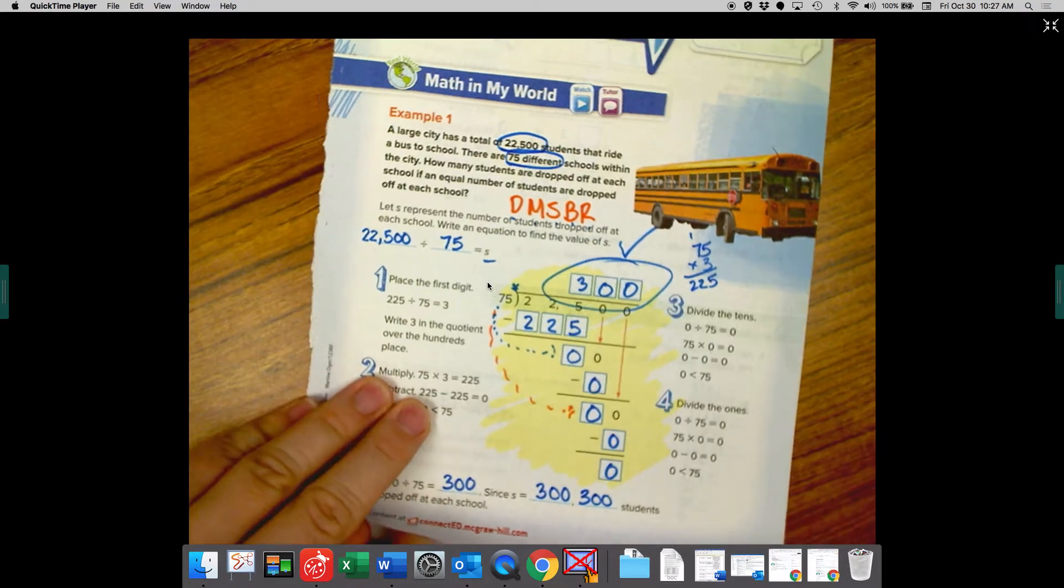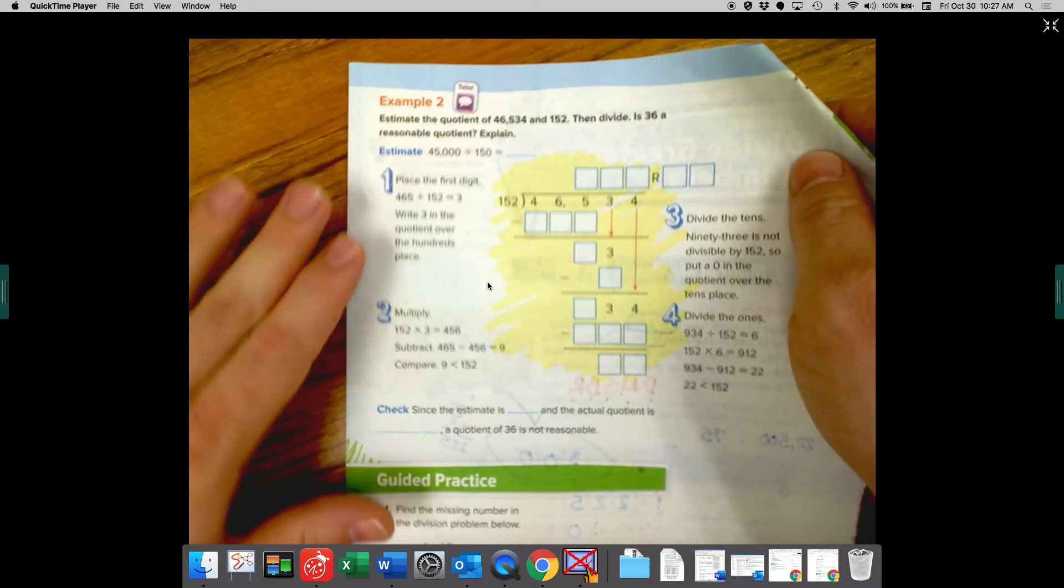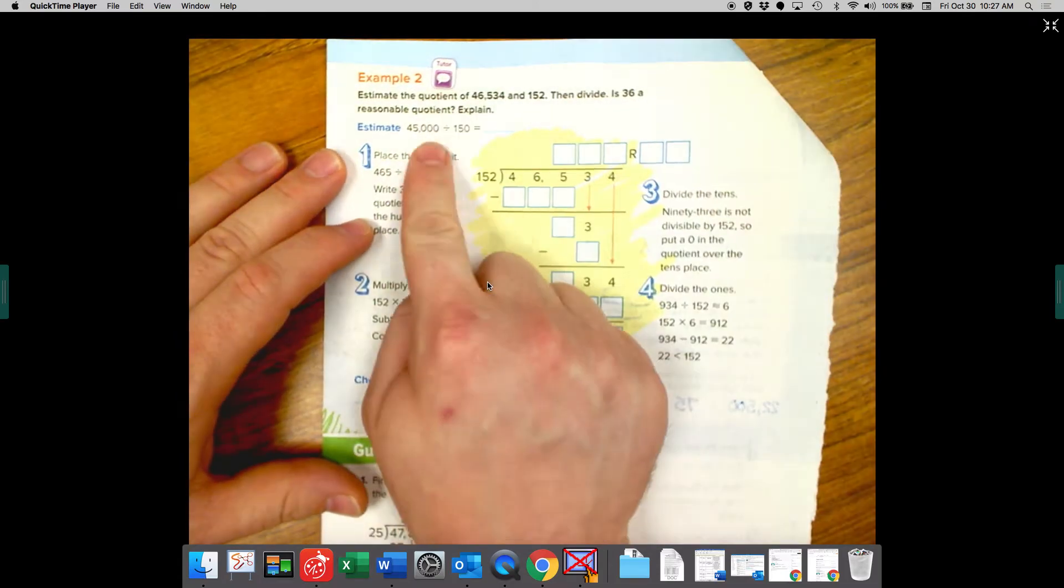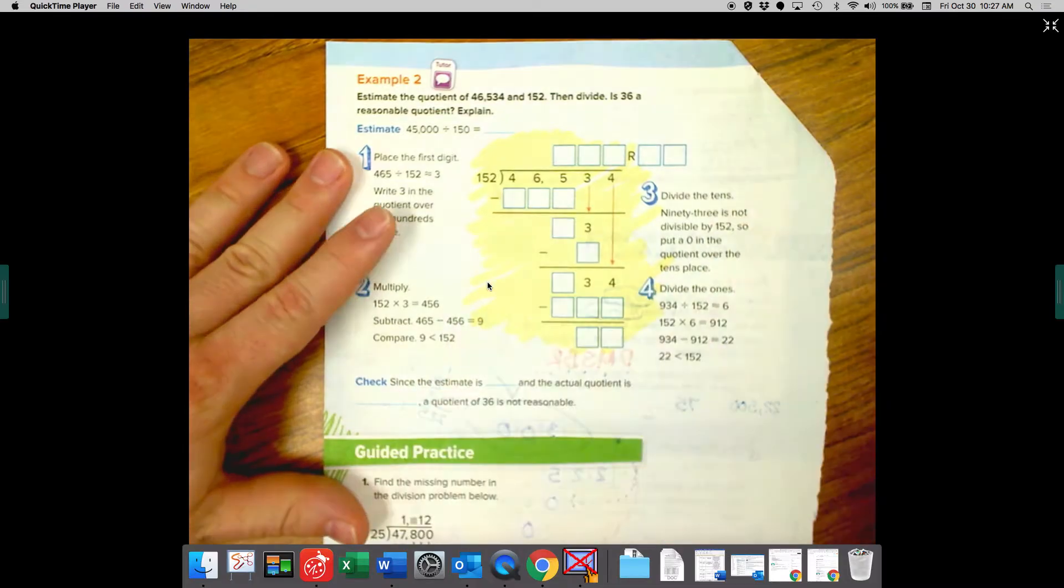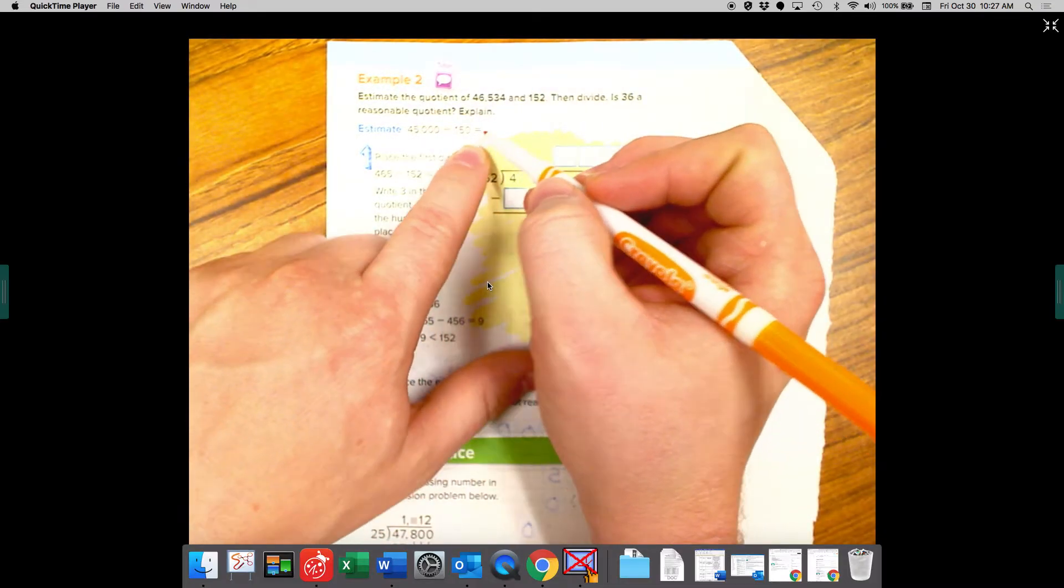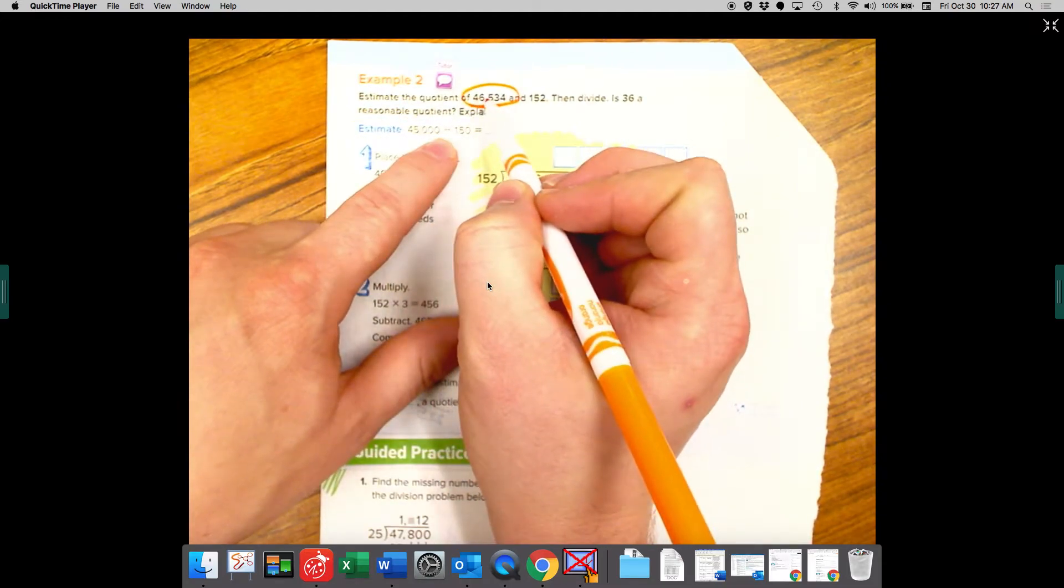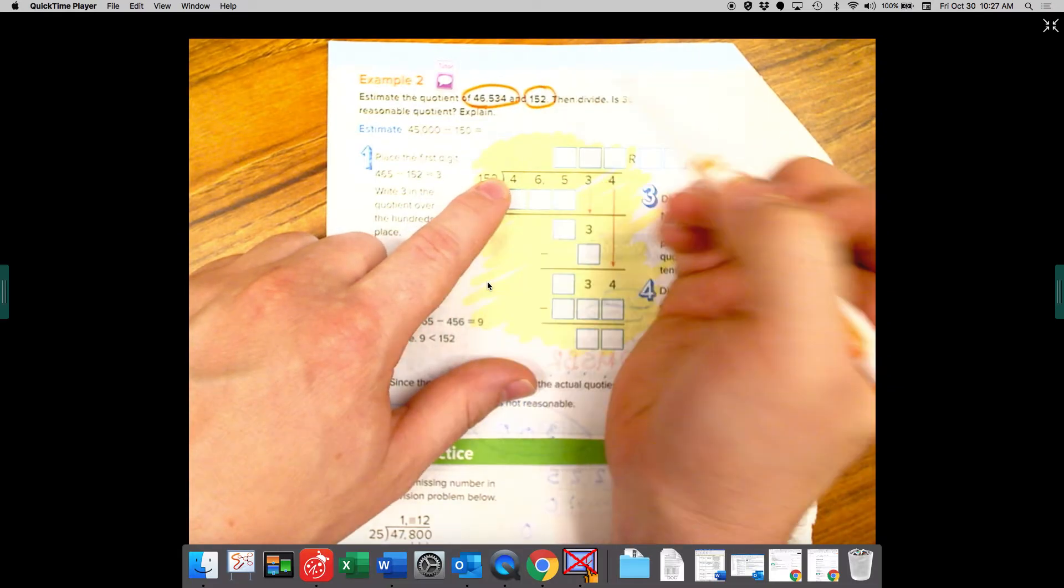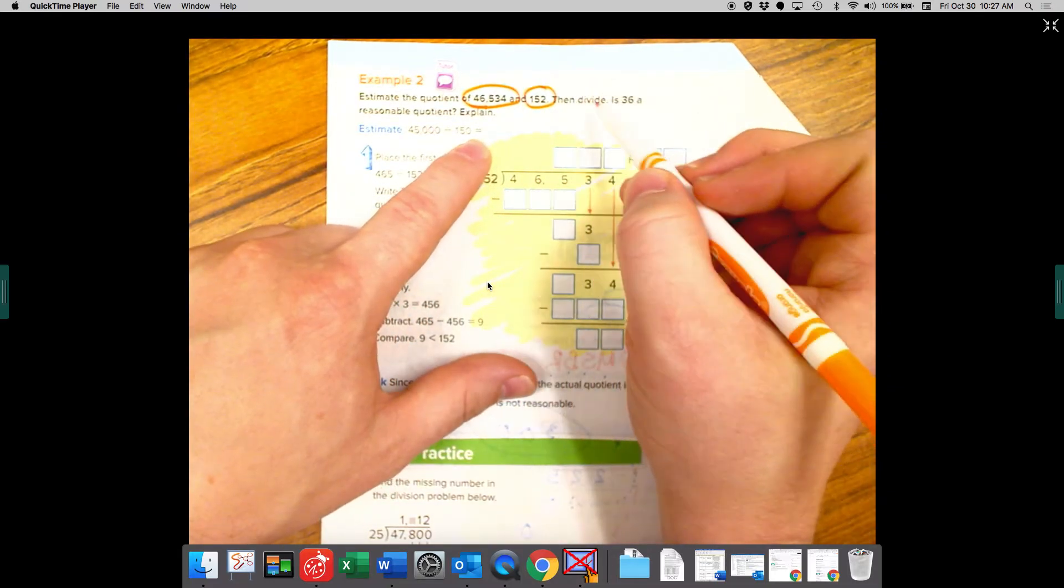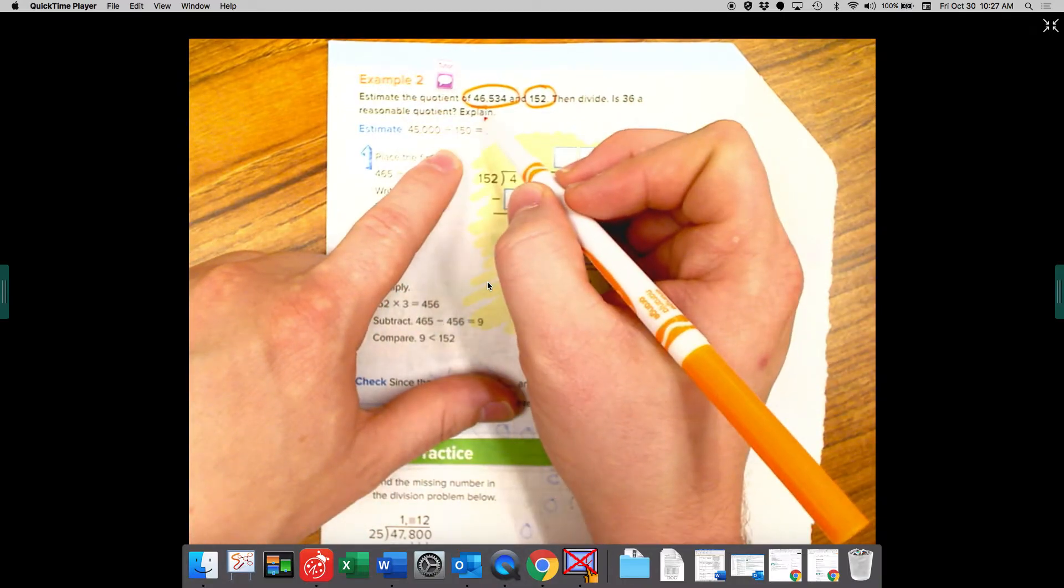All right, let's give this another try on the top of page 278. We're going to do the same thing. We're going to estimate first, and then we're going to solve to find out the real answer. They kind of put the estimate there for us. So here's the real numbers. Estimate the quotient of 46,534 and 152. Then divide. Is 36 a reasonable quotient? And explain.